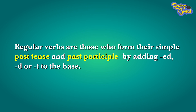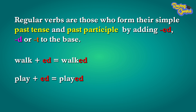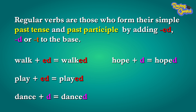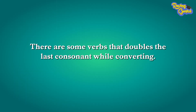Regular verbs are those that form their simple past tense and the past participle by adding -ed, -d, or -t to the base. For example: walk + ed becomes walked, play + ed becomes played, dance + d becomes danced, hope + d becomes hoped, dream + t becomes dreamt, burn + t becomes burned.